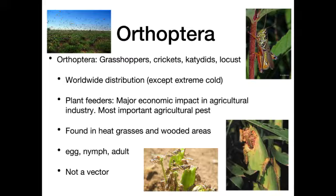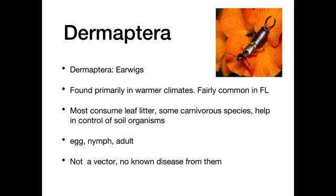Orthoptera — grasshoppers, crickets, katydids, and locusts — have worldwide distribution except in areas of extreme cold. They are plant feeders, and their biggest problem is huge agricultural impact. Locusts swarm in giant black clouds of millions, and can literally mow down entire cornfields — hundreds of acres in a matter of 24 hours. They're found in wheat grasses and wooded areas and exist in egg, nymph, and adult form. They are not a vector of disease, but they do have major agricultural and financial impacts.